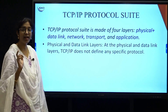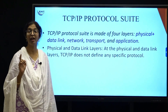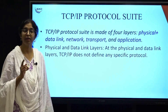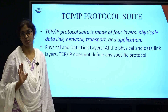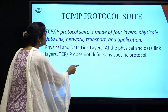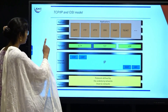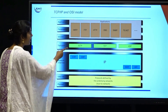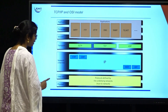How many layers did we have in the OSI model? We have 7 layers in the OSI model, whereas in the TCP/IP model we have only 4 layers. Now I will show you a comparison between the layers of the OSI model and the TCP/IP model.